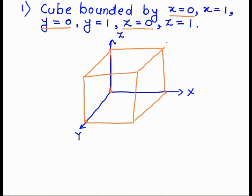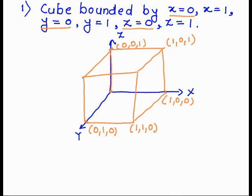The corner coordinates of the cube are: (1,0,0), (0,1,0), (1,1,0), (0,0,1), (0,1,1), (1,0,1), origin (0,0,0), and (1,1,1). So this is the cube bounded by x=0, x=1, y=0, y=1, z=0, and z=1.